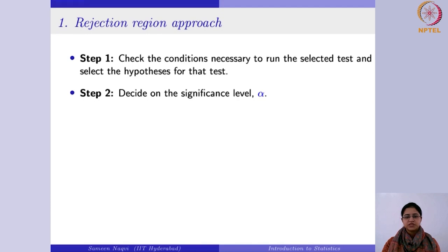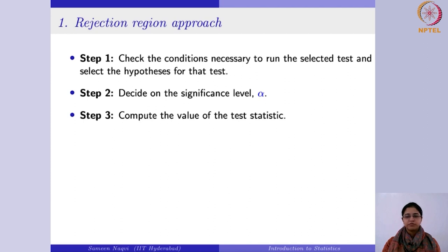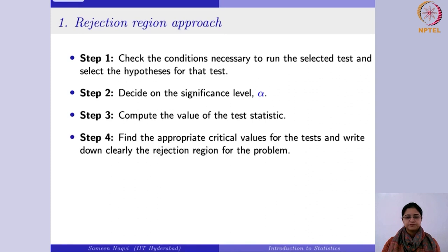Next, you will decide the level of significance alpha. The value of the test statistic will be computed depending upon whatever setup you had — whether sigma is known or unknown for mean, or in the case of variance, or in the case of proportion. We will see in different cases how your test statistic varies. That incorporates the idea of the sampling distribution we have been studying. Next, we find the appropriate critical values and write down the critical region or rejection region.